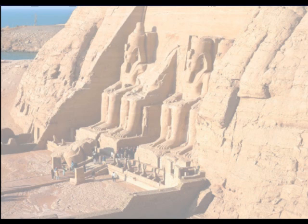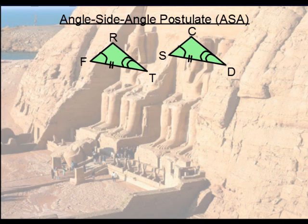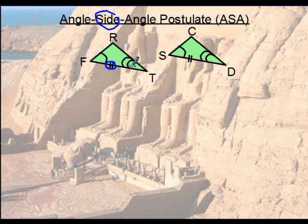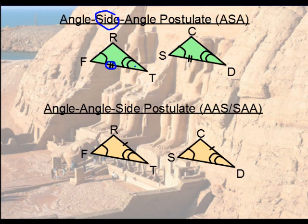Now for angle-side-angle. This is when you have only one side instead of two or three. The other two parts are both angles, and this is called angle-side-angle because the side is included between the two angles. You can also have a situation where the side is not included — that's angle-angle-side. Reading it backwards is okay; it means the same exact thing.